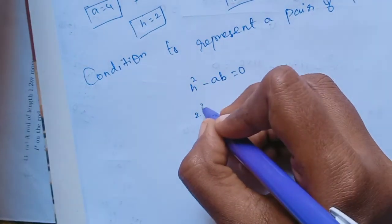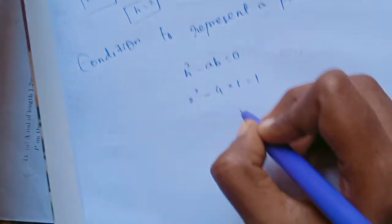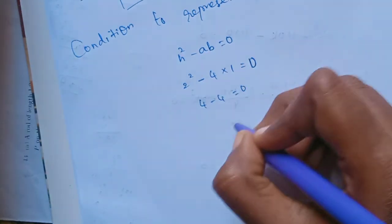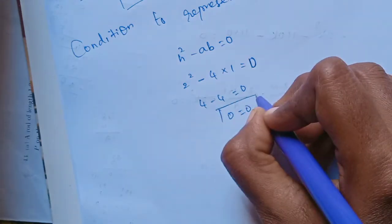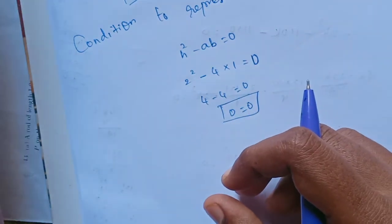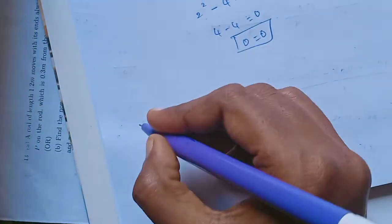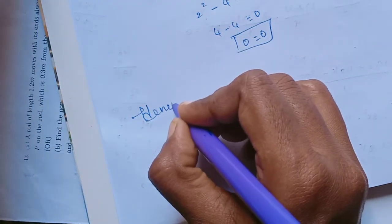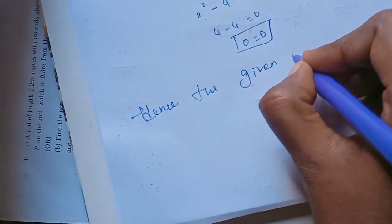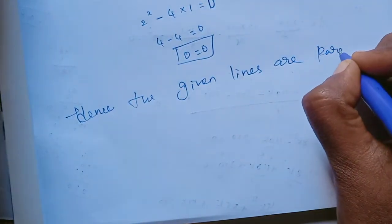Now checking: H² - AB = 2² - (4)(1) = 4 - 4 = 0. Since H² - AB = 0, the condition is satisfied. Hence, the given equation represents a pair of parallel lines.